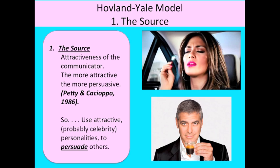The source is the person or publication trying to persuade you. Petty and Cacioppo identified that the attractiveness of the communicator was really important in persuasion — the more attractive the person or publication, the more persuasive it will be. An application of Hovland-Yale is therefore to use attractive, probably celebrity personalities to persuade others. You can see Nicole Scherzinger advertising Müller yogurts and George Clooney advertising coffee — both considered extraordinarily attractive in the eyes of most people in society.